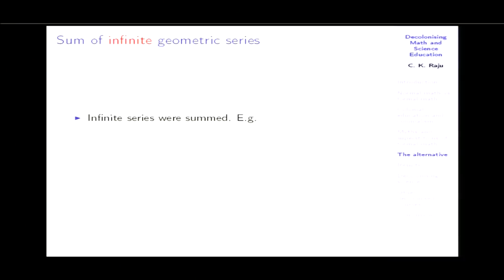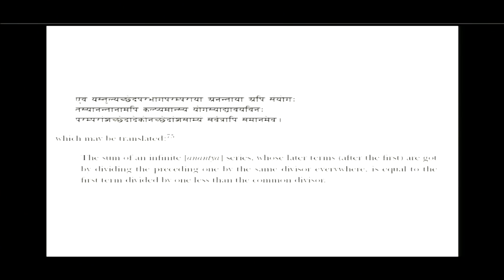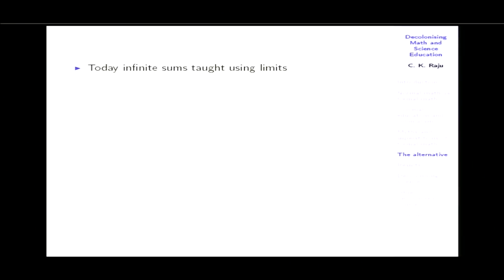The first written formula for the sum of an infinite geometric series was given by Nilakantha in his commentary on Aryabhata's Ganita 22. The difference I'm pointing to is that today infinite sums are done using limits. But these limits are a particular metaphysics of infinity. In India, infinite series were summed differently using what is called non-Archimedean arithmetic. In the Western notion of limit, you assume that as you go to infinity everything becomes perfect. In non-Archimedean arithmetic, you assume that even at infinity the same problems persist — except that differences become infinitesimal instead of finite.